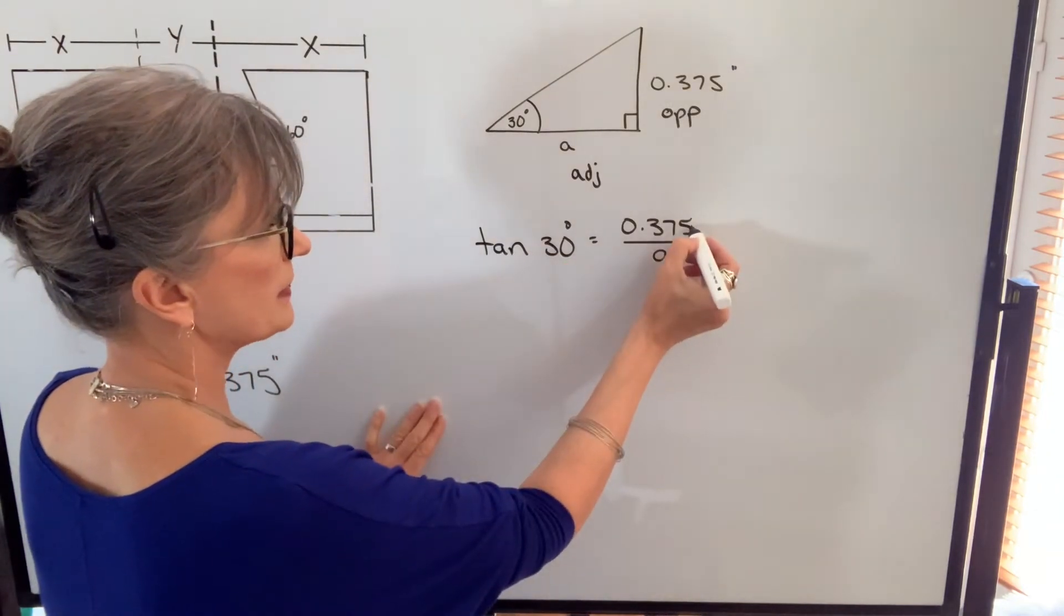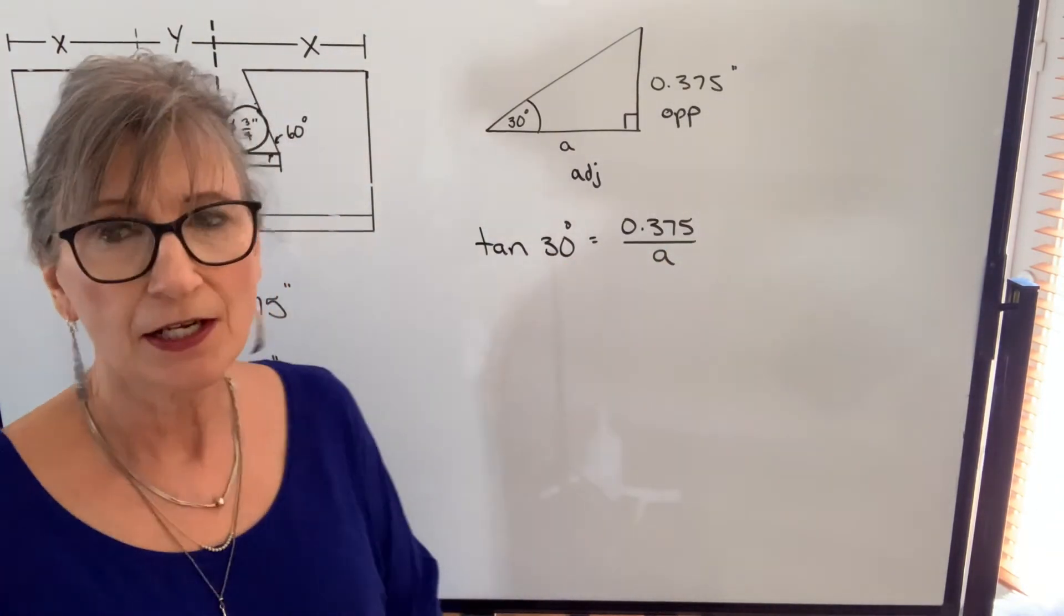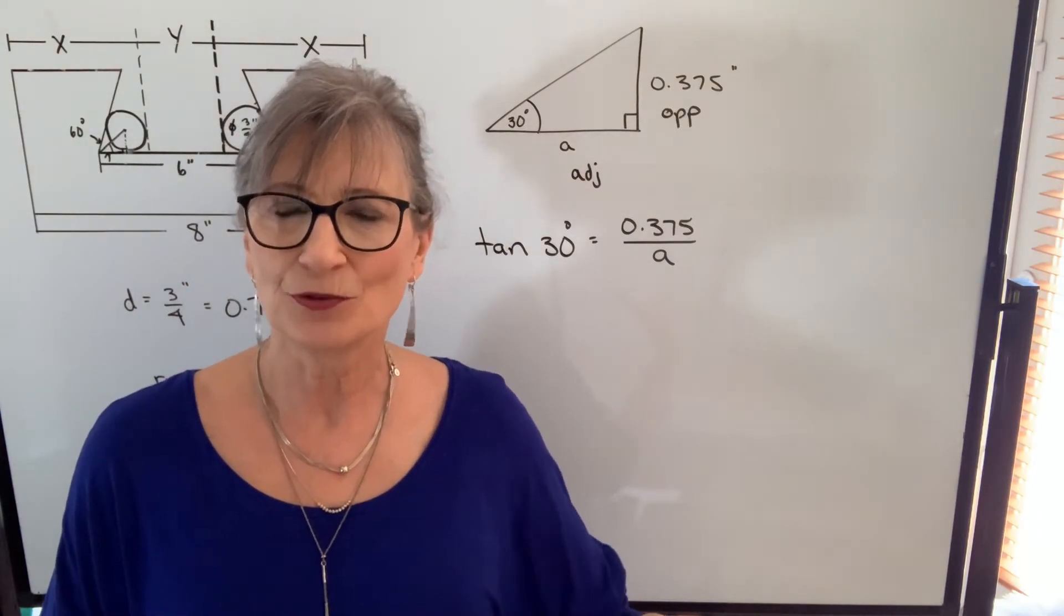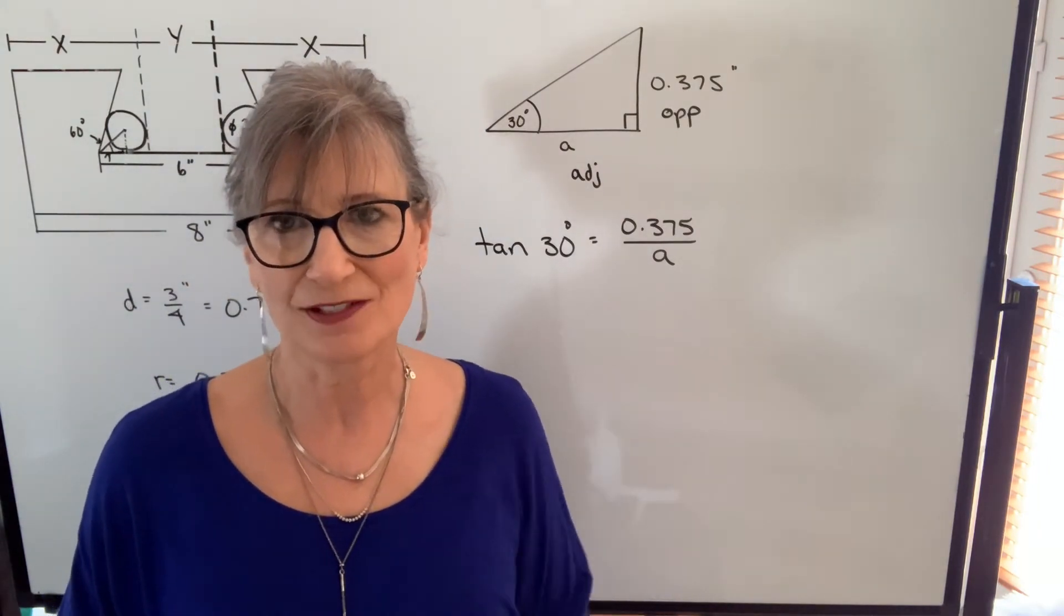Tangent of an angle is the opposite side over the adjacent side. And if you're not sure about your trig functions, you can check out some videos that I did on trig functions previous to this one.